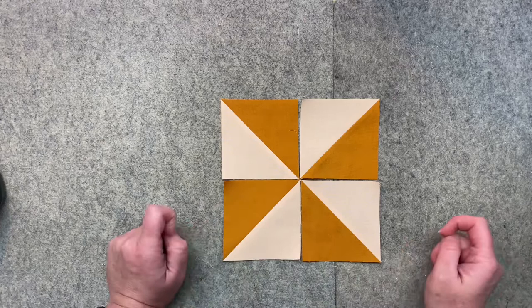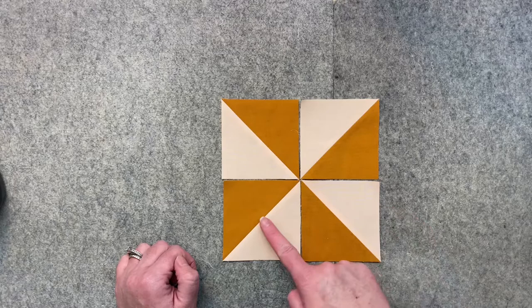All right, so now what we're going to do is sew this together and sew this together. All right, so I've got my two rows sewn, and what I'm going to do now is just press this seam.